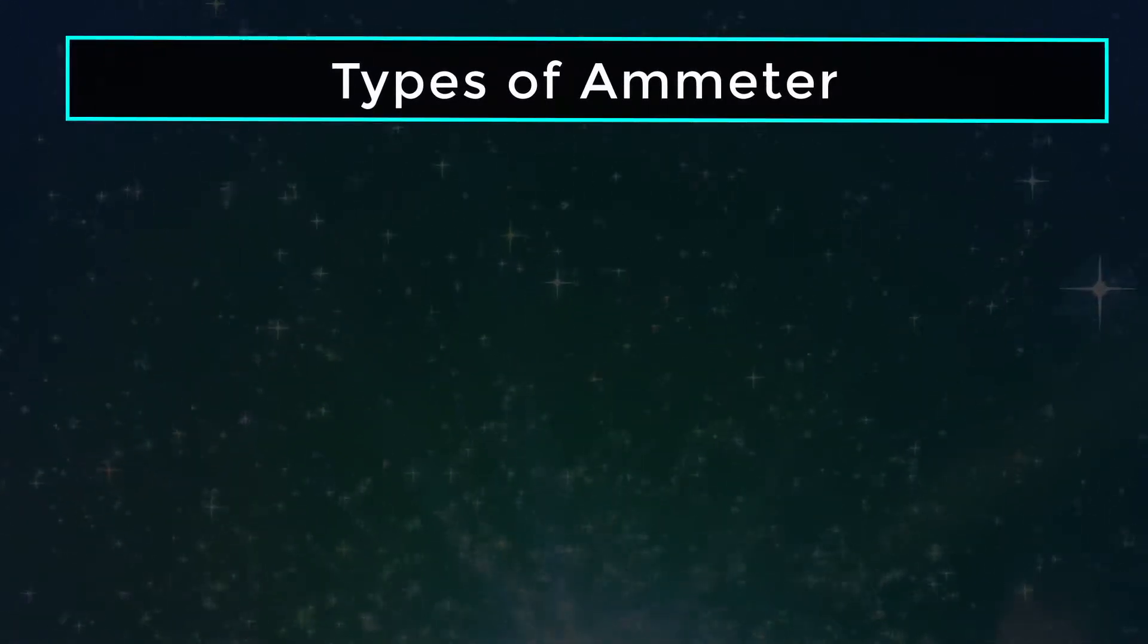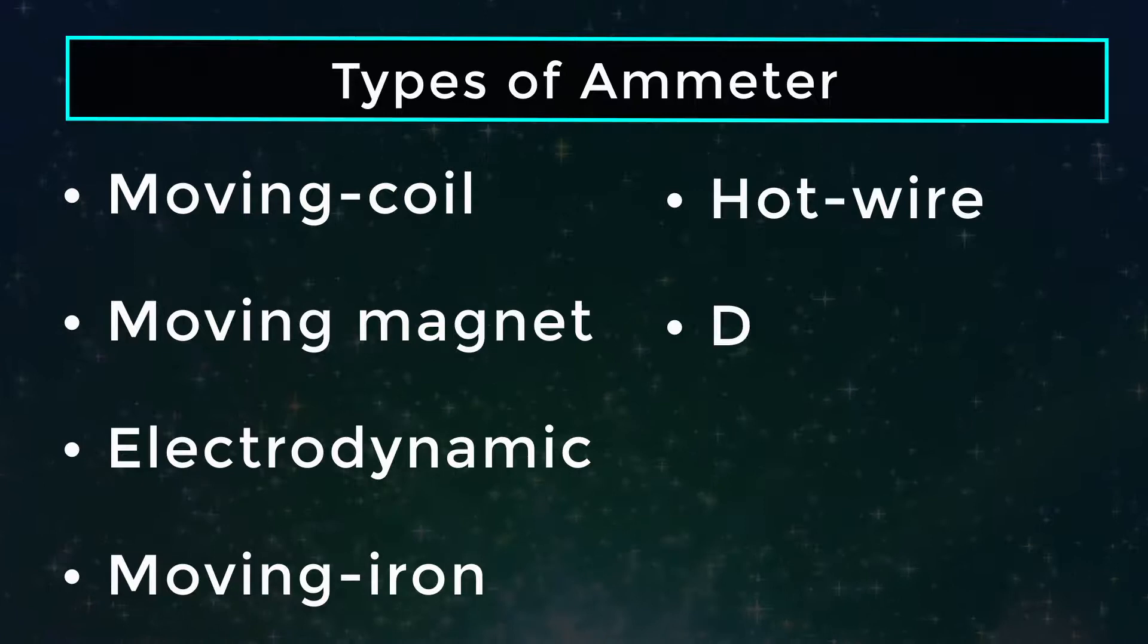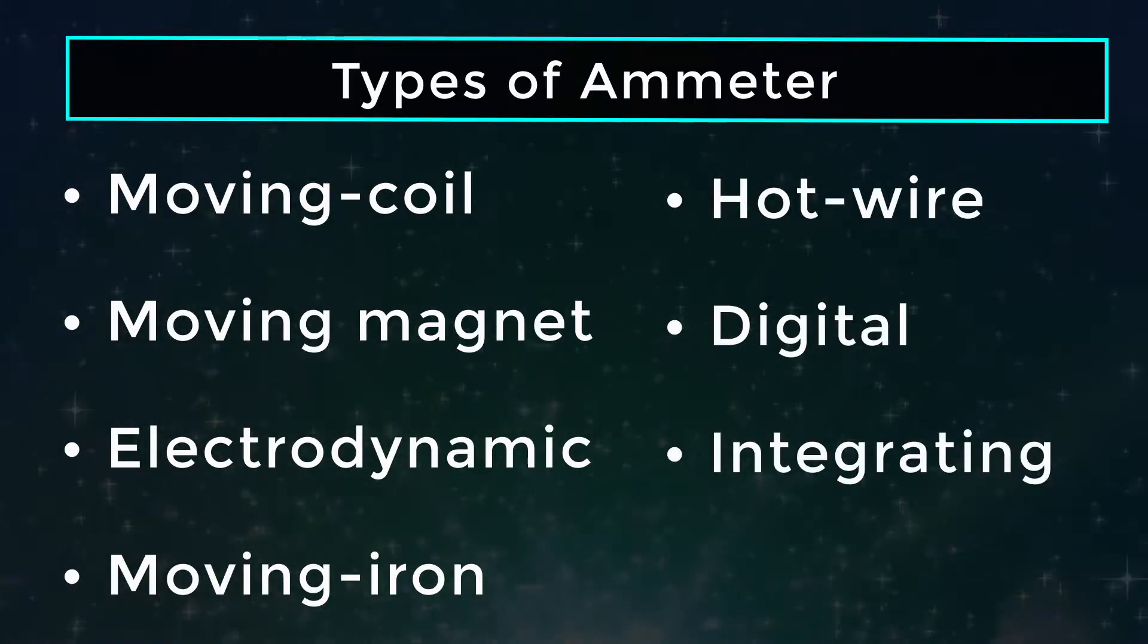Types of ammeter: Moving coil, moving magnet, electrodynamic, moving iron, hot wire, digital, and integrating.